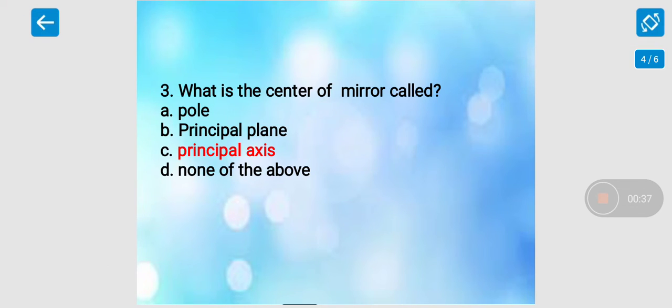Third question: What is the center of mirror called? Option A: pole. Option B: principal plane. Option C: principal axis. Option D: none of the above. Here, in this, there is one correction. Correct option is A, pole, not principal axis. So the correct answer is option A, pole.